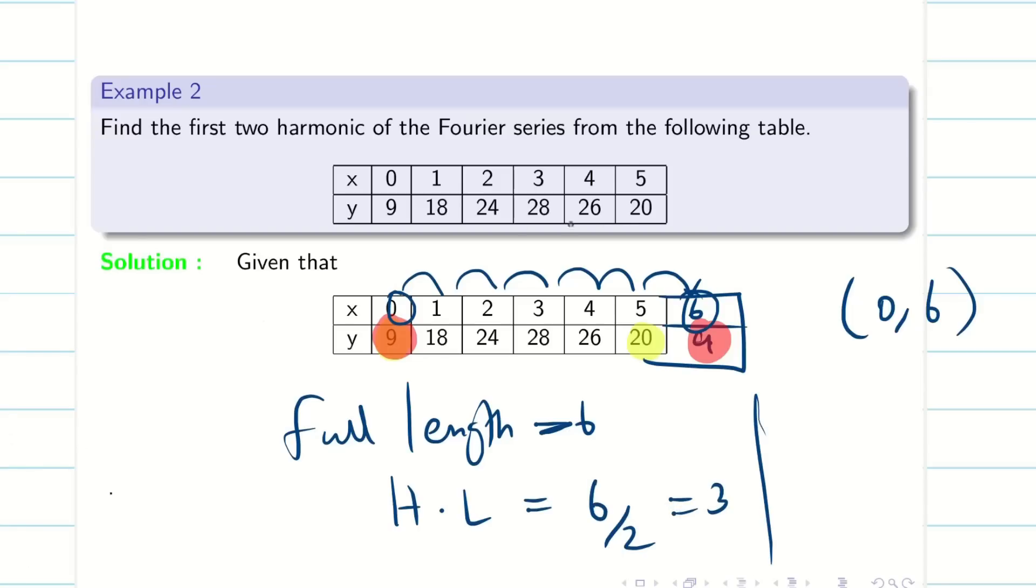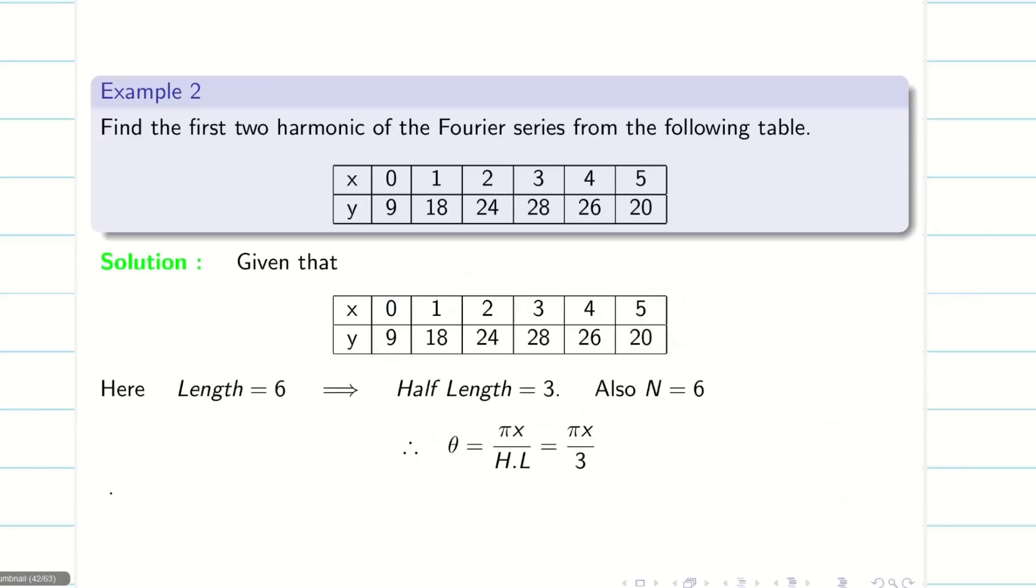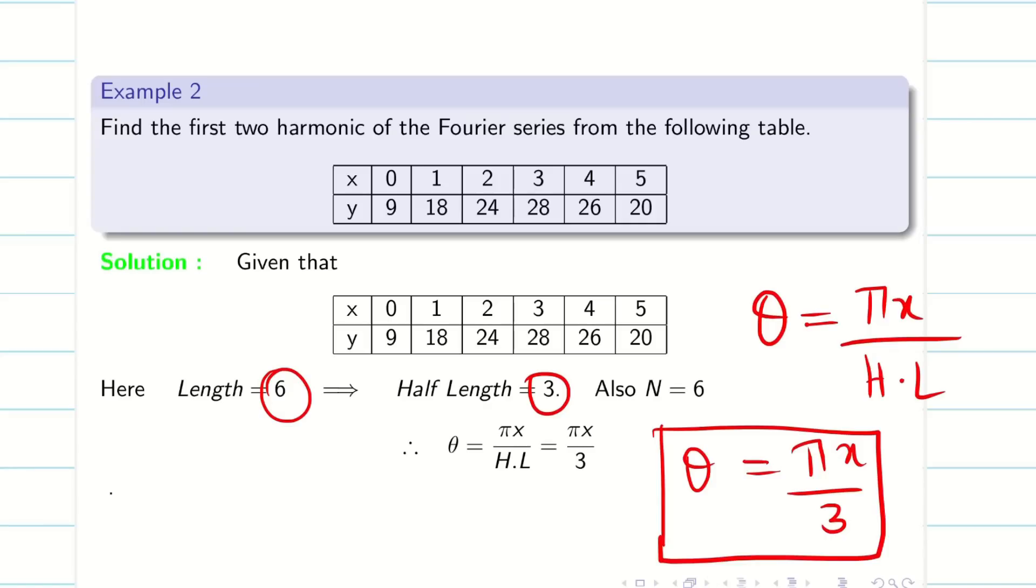Next, if I want to find n value, I have to delete the repeated value and count it: 1, 2, 3, 4, 5, and 6. So my n equals 6, which is the non-repeated value. Since there is a repetition, I deleted it. Now I know my full length, half length, and n. Let's go into the problem. I want to convert the problem into degree mode: pi x divided by half of the length, pi x divided by 3. Since my full length is 6, half length is 3, so my theta is going to be pi x by 3.